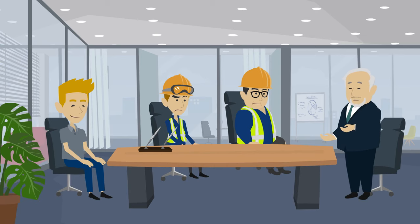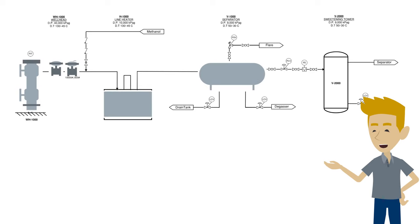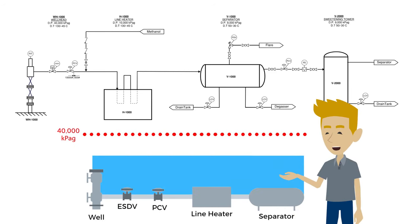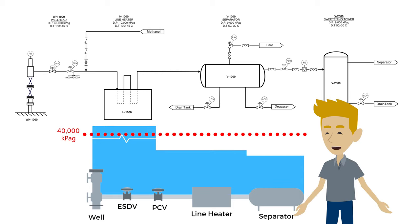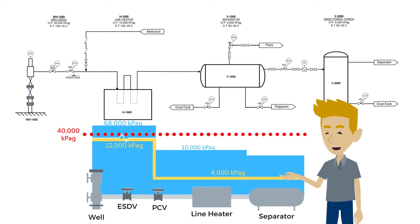One of the wells was shut down this morning due to a high pressure event. Let's take a look at the P&IDs for the process equipment and piping around the separator. The process starts at the well. The maximum pressure the well is capable of producing is 40,000 kPaG. The piping downstream of the well has 10,000 pound flanges, which under our operating temperature gives a maximum operating pressure, or MOP, of around 68,000 kPaG. The pressure from the well is normally 12,000 kPaG and is reduced to 4,000 kPaG with a pressure control valve, or PCV. The piping downstream of the PCV is 600 pound with an MOP of around 10,000 kPaG. The sour emulsion then travels through a line heater and on to the three-phase separator that experienced the high pressure event earlier today.